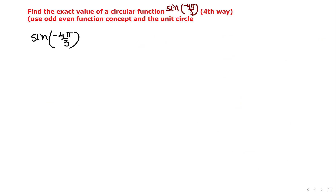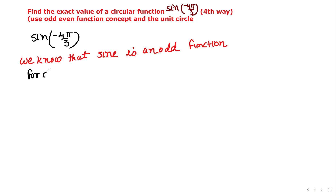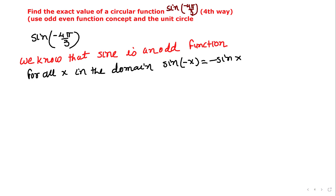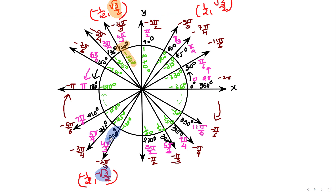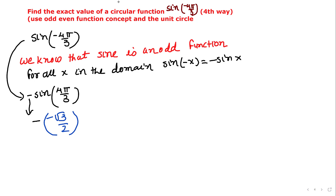The fourth way uses the odd/even function concept and then the unit circle directly. Sine is an odd function, so sine(-x) = -sine(x). Therefore, sine(-4π/3) = -sine(4π/3). On the unit circle, 4π/3 is located in quadrant 3, and sine(4π/3) = -√3/2. Carrying down the minus sign: negative times negative is positive √3/2.